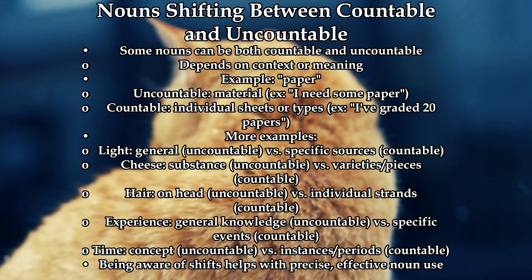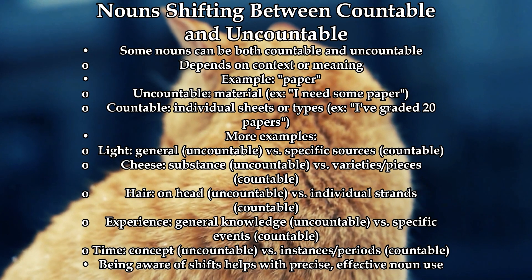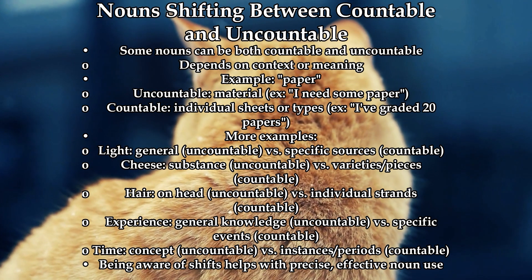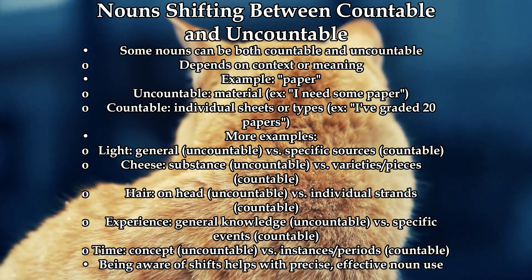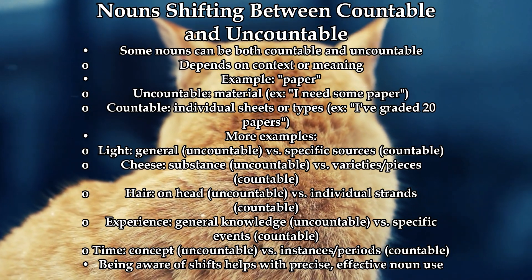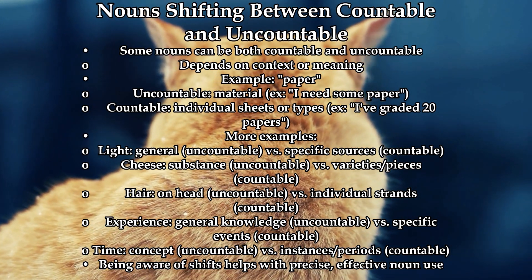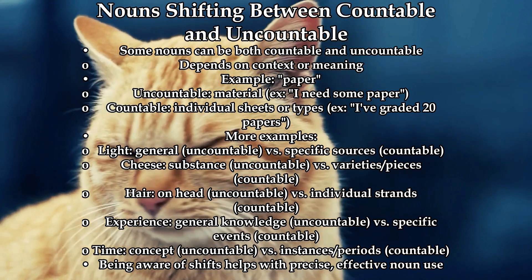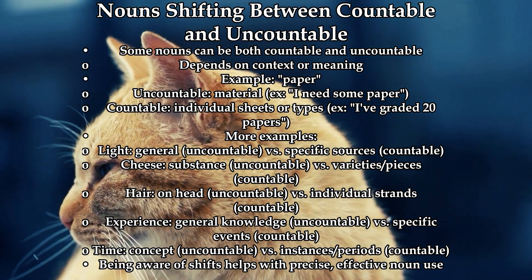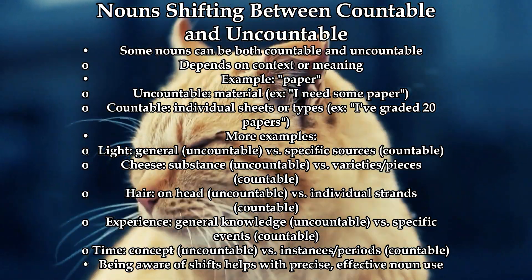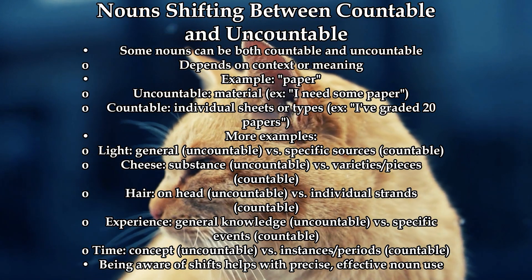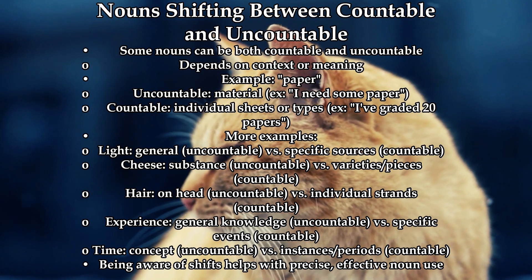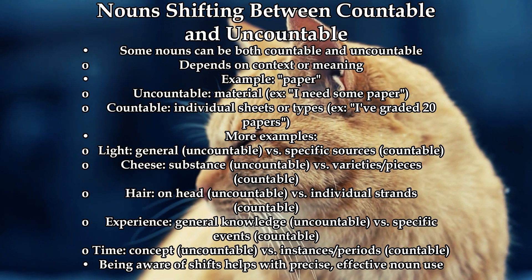Here are some more examples of nouns that can shift between countable and uncountable. Light: when referring to the general concept, 'light' is uncountable, as in 'the room was filled with a soft light.' But when talking about specific sources or types of light, it becomes countable, like 'the photographer used several lights to create the desired effect.'